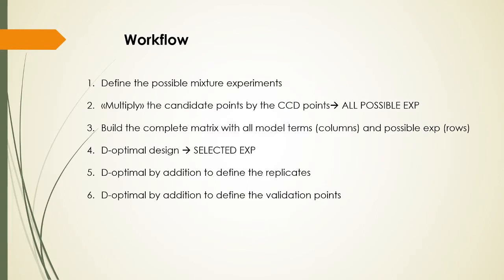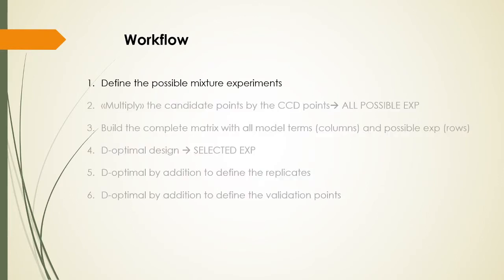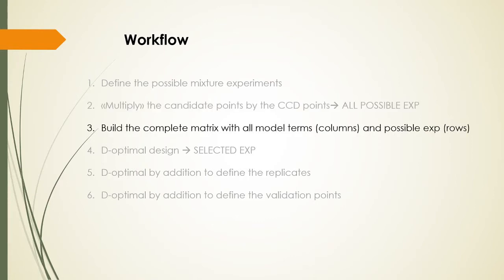This is the workflow that we will go through. First of all, we need to define the possible mixture experiments with the constraints applied to the mixture variables. Then we need to multiply the candidate points of the first matrix by the central composite design points to obtain all possible experiments. Then we need to build a model matrix to have all the model terms as columns and all the possible experiments as rows, and we will do this with Excel. Then this matrix will be used to select the experimental matrix by the optimal design.